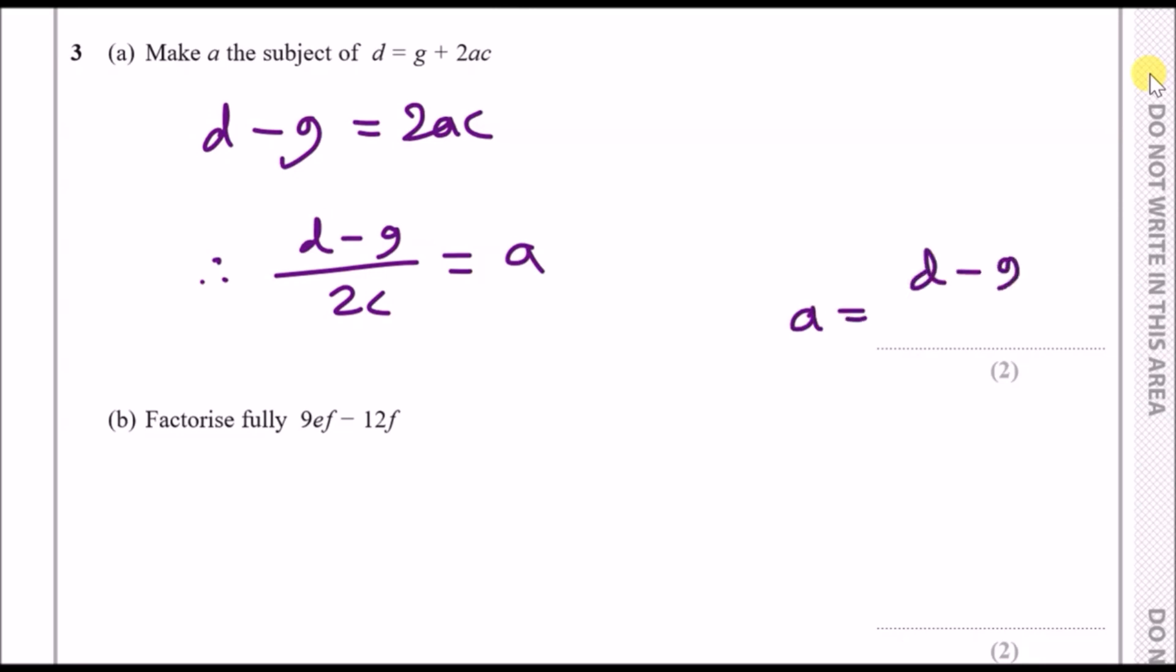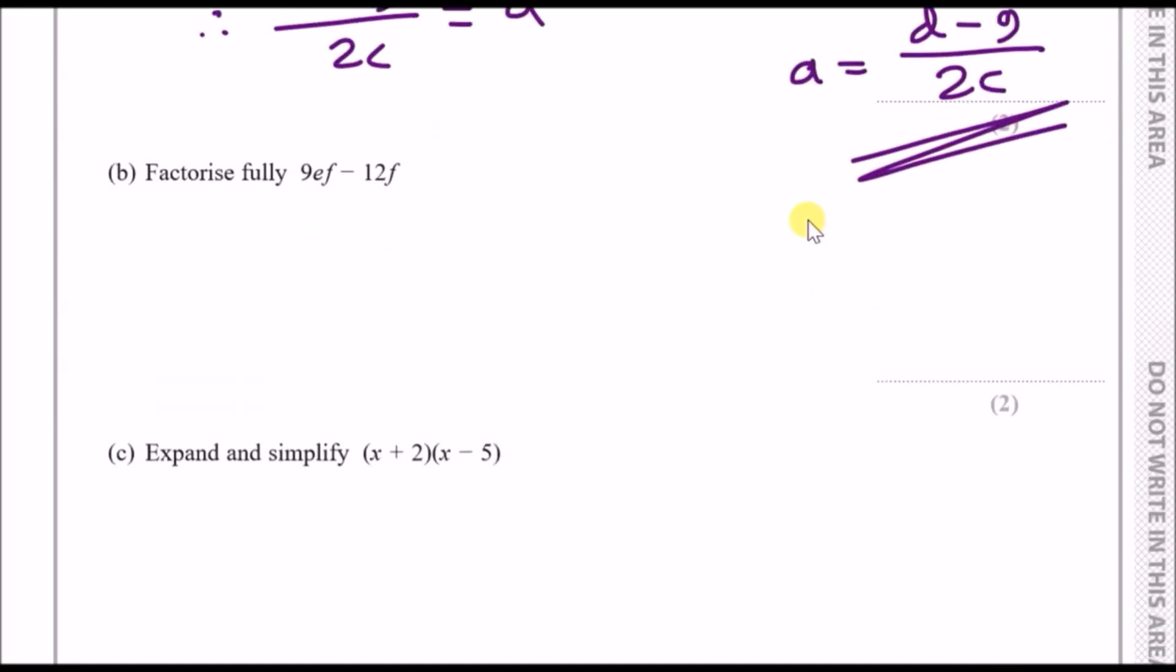For part b we've got factorize fully 9ef minus 12f. To factorize essentially means you divide both of these terms by common factors, numbers and letters. For the numbers we can look at 9 and 12 and we can see that they're both in the 3 times table, so we're going to take out 3 outside some bracket.